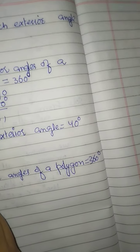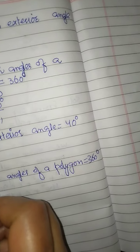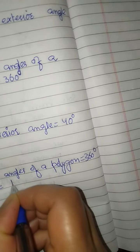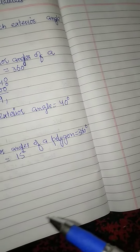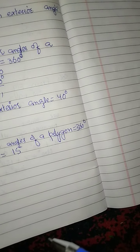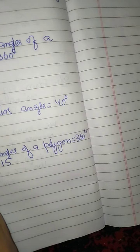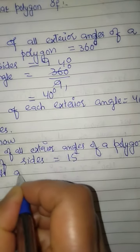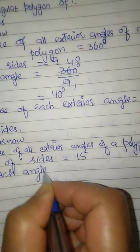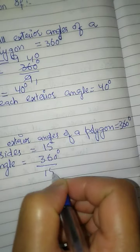The number of sides here is 15. This is a regular polygon, so all sides and all angles are equal. The number of angles will also be 15. So the measure of each angle is 360 degrees divided by 15.